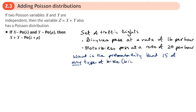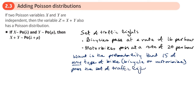That means it's a bicycle or it could be a motorbike — they're both types of bike. Bicycles pass at a rate of 16 per hour, motorbikes at 20 per hour. What's the probability that exactly 15 of any type of bike, bicycle or motorbike, pass the set of traffic lights in one hour? This can be modelled by a Poisson distribution.